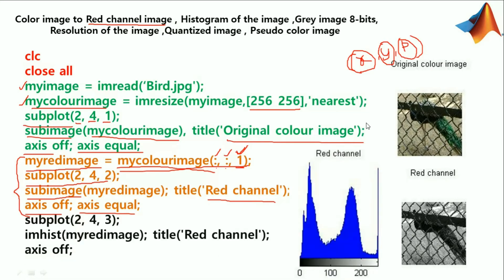Next, we need to get the histogram of this red channel image. We use imhist(my_red_image), which automatically uses a scale of 0 to 255. This gives us the red channel image histogram. We also use axis off and axis equal so that the image is displayed with the same scale.